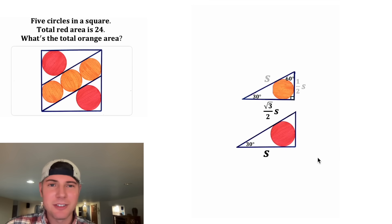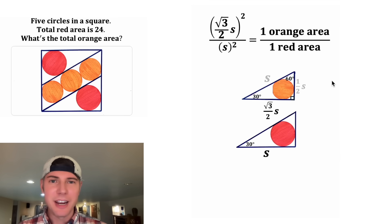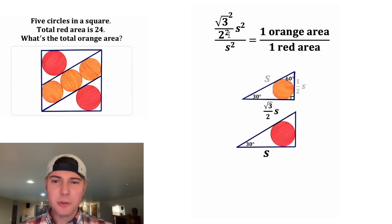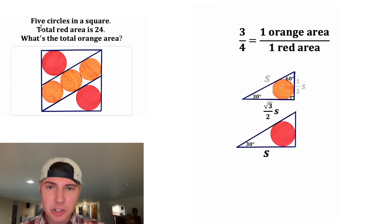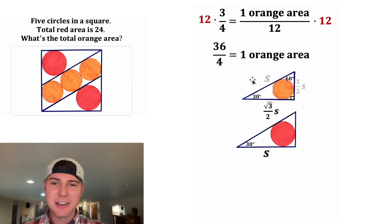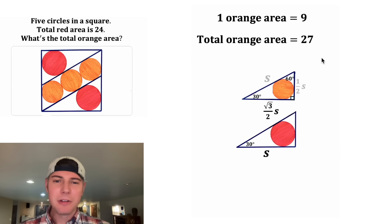Now we have two similar triangles with inscribed circles. The scale factor of this triangle to this triangle is (√3 over 2) S over S. Squaring both terms gives the ratio of the areas. Cleaning up this proportion: the square goes to all three terms on top and to S on bottom. The square root and square cancel each other out, 2 squared is 4, and the S squared terms divide each other away. So we're left with 3/4 equals one orange area over one red area. The total red area is 24, so each red circle has area 12. Multiplying both sides by 12: 12 times 3 over 4 is 36 over 4, and the 12's cancel to give one orange area. 36 over 4 simplifies to 9. So one orange circle has an area of 9.